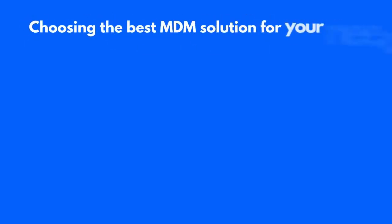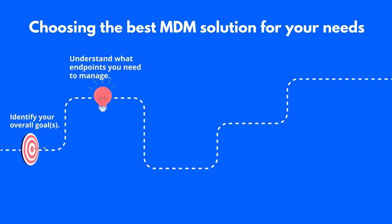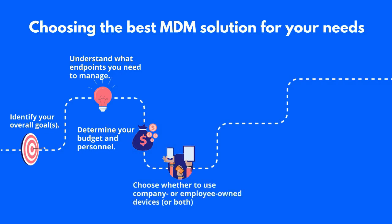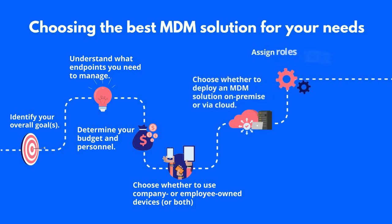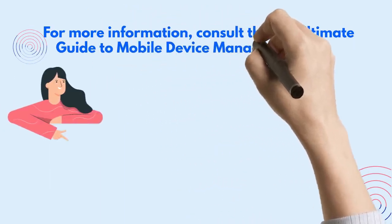There are a few steps to make sure you choose the best MDM solution for your needs. First, identify your overall goals, such as improving worker productivity by a certain amount. Then, catalog all endpoints you need to manage, including mobile devices, computers, IoT devices, and anything else on hand. Figure out your budget and the staff you can devote to the task. Consider whether you will provide employees with devices or ask them to use their own, and whether you want cloud or on-premise MDM. Next, assign roles and tasks to all staff involved — accountability leads to faster resolution of issues. Finally, consider what makes your business unique, such as your location or product. For more information, consult the full Ultimate Guide to Mobile Device Management using the link below.